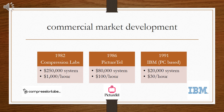As technology advanced, video conferencing was able to come to the commercial market. However, it still was not cheap by any means. In 1982, Compression Labs brought their video conferencing system onto the market at $250,000, and it cost about $1,000 an hour to use the system.